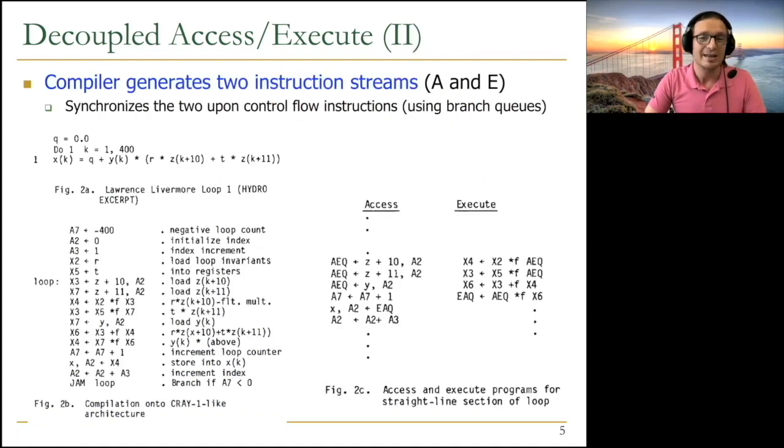The basic idea is, instead of having a single instruction stream, this is a very famous loop, Livermore loop, it does some scientific computation. You basically have two instruction streams, access and execute, essentially doing the same thing. Whenever you need to do memory access, you do it over here. Whenever you need to do operations, executions, and branches, you need to do it over here. And whenever you need to communicate a memory access result to the execute processor, you need to put it to access to execute queue. Communication happens through these queues.